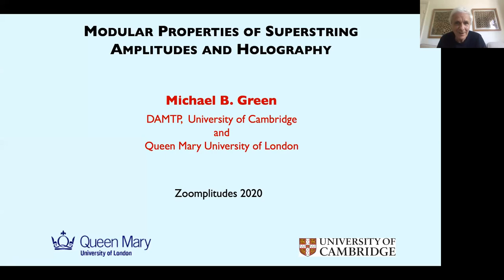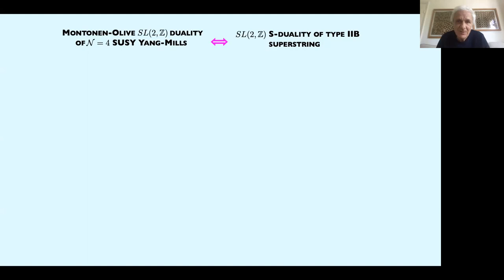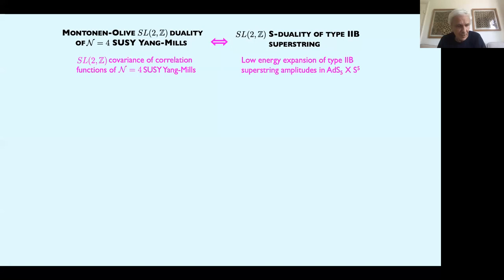It's a great pleasure to be taking part in this very unusual meeting at this pretty awful time for the world. I'm going to talk about some recent work that I've done in collaboration with a variety of people, and it will be in two parts. The basic aim is to make a detailed comparison of the structure of correlation functions in N equals 4 SYM and the holographic image by looking at the large N expansion of the correlation function and the low energy expansion of the dual string theory in ADS-5.